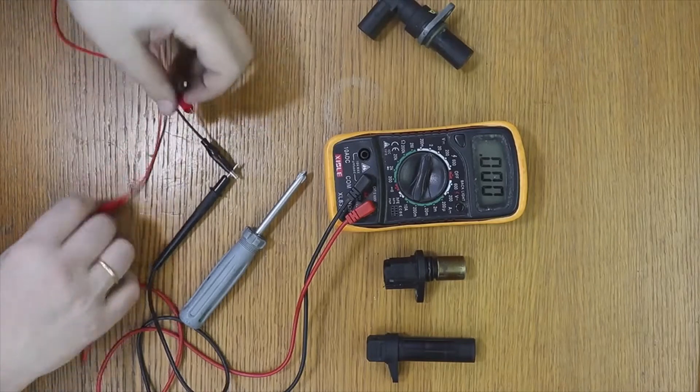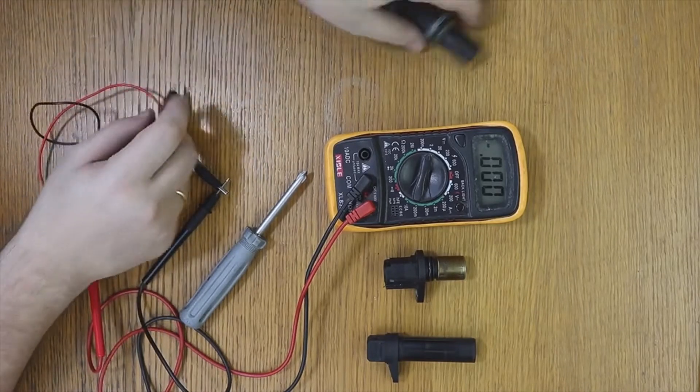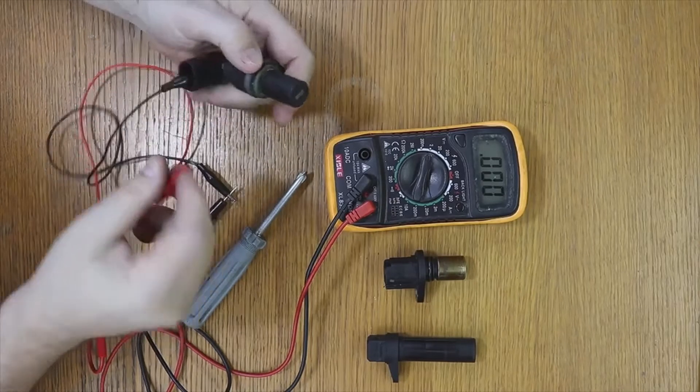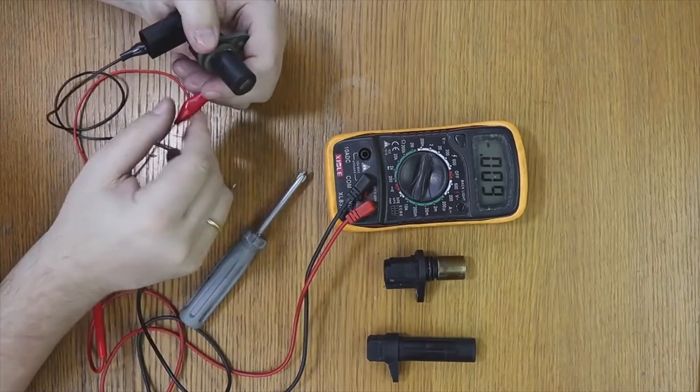As I say, this test is only for crankshaft position sensors that have two pins. For sensors with three pins, which use the Hall effect, the best test would be with an oscilloscope.